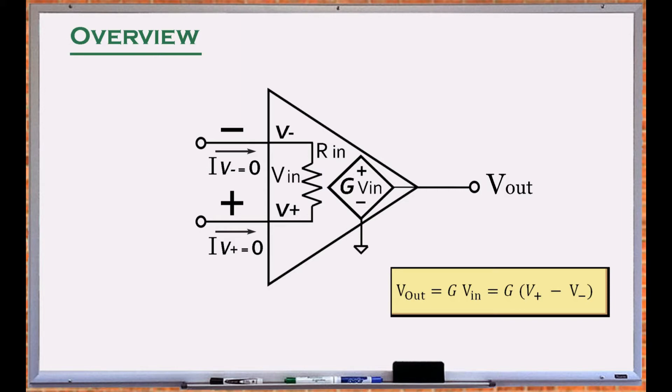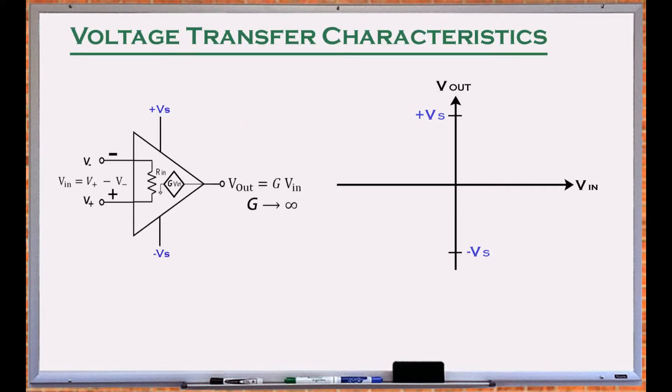The open-loop gain of an ideal amplifier is infinite. The voltage transfer characteristics of an amplifier consists of negative saturation, positive saturation, and linear regions. Note that an amplifier is an active component and its output cannot exceed the supply voltages.